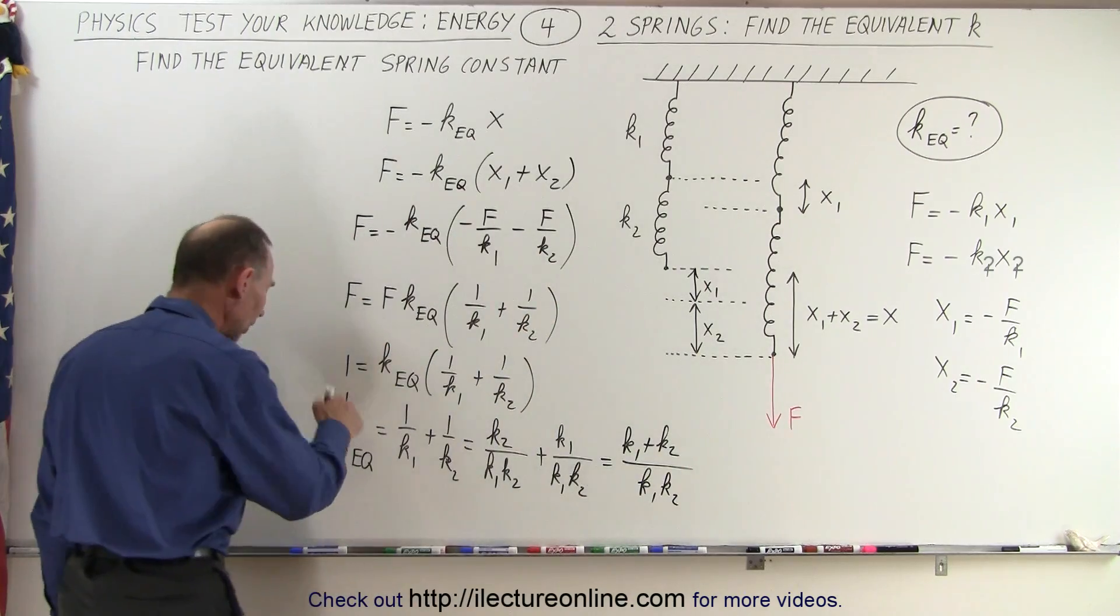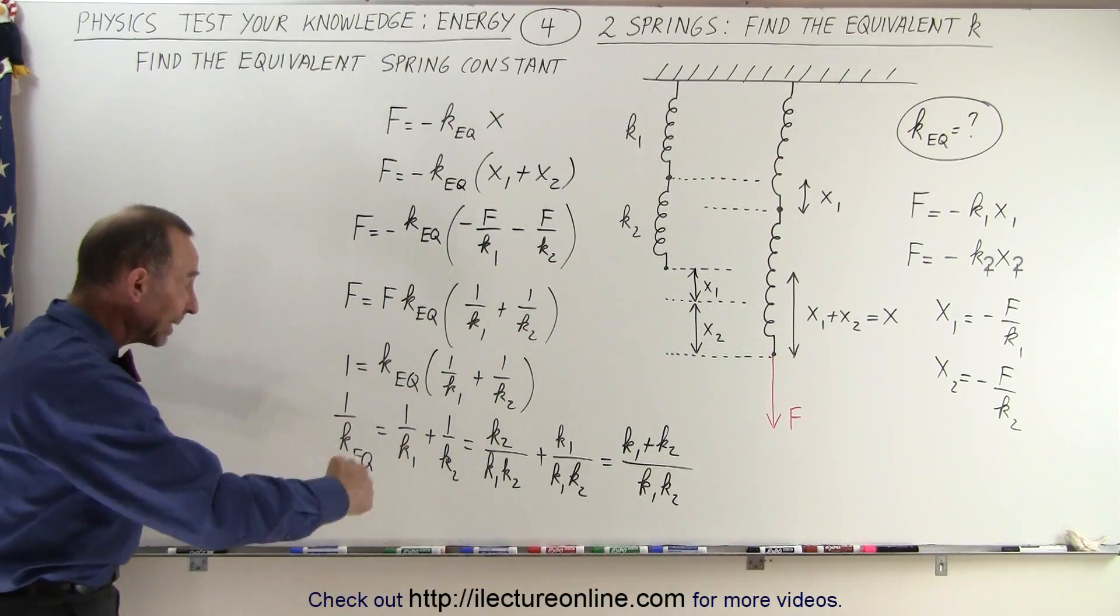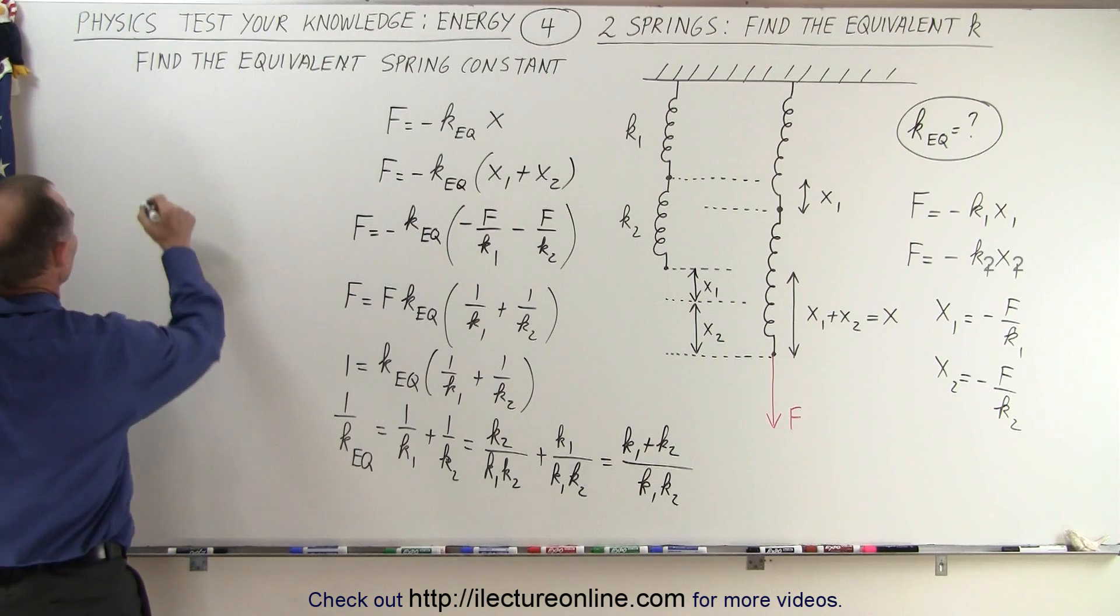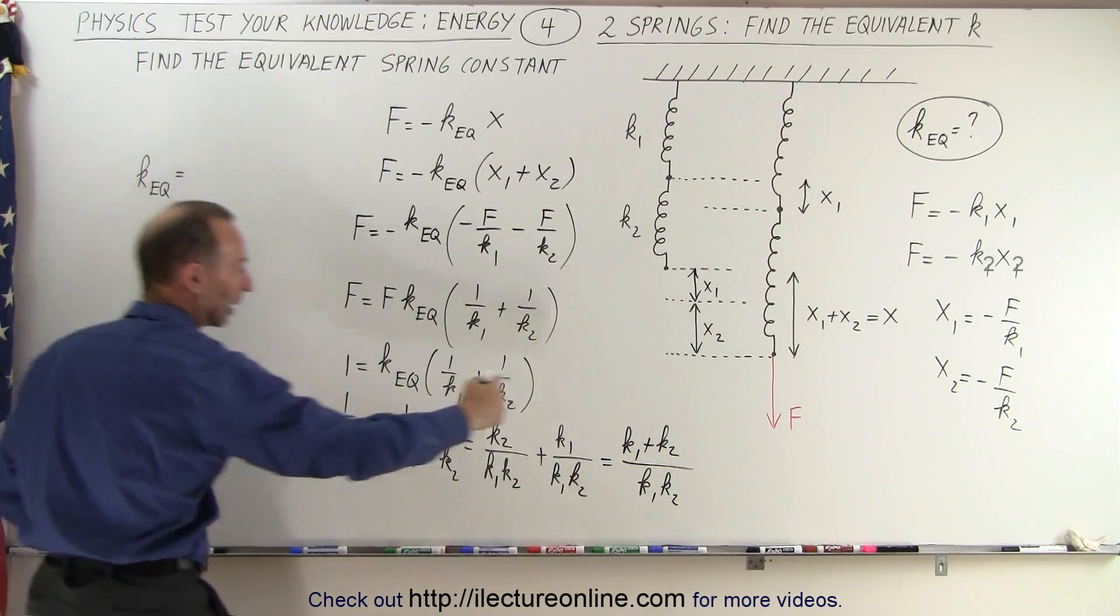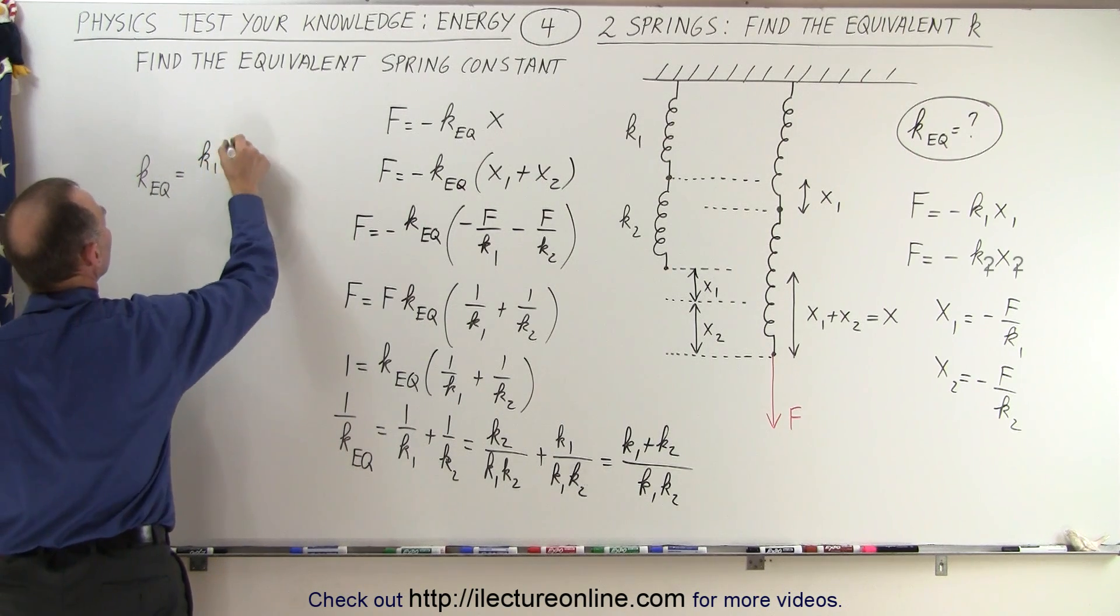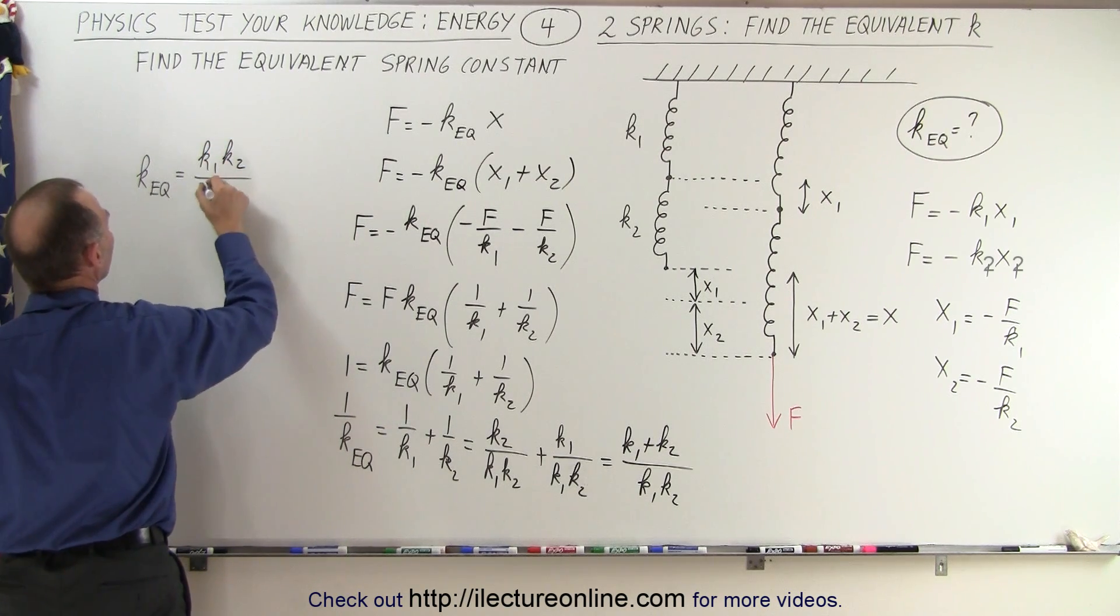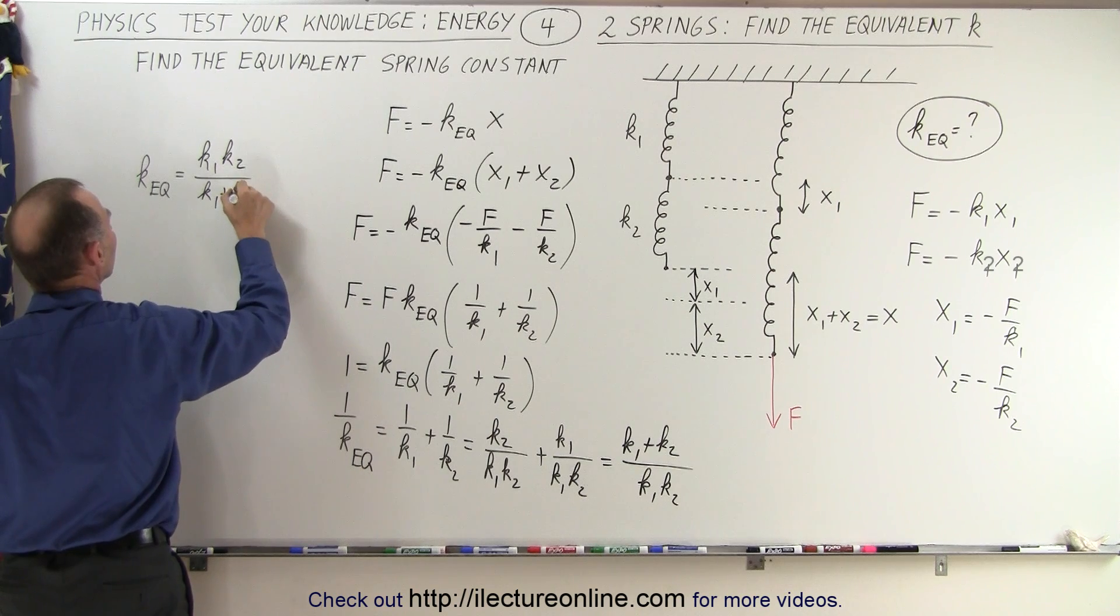But this is equal to 1 over k equivalent, so if we now take the inverse of both sides, we can then say that k equivalent is going to be equal to the inverse of that, which is the product k1 k2 over the sum k1 plus k2.